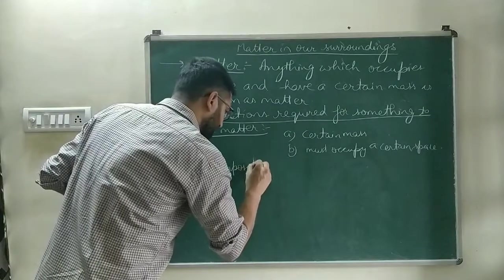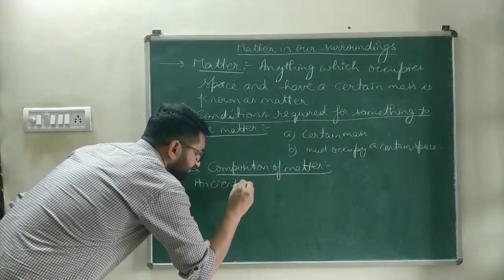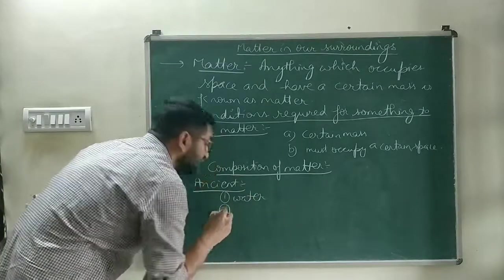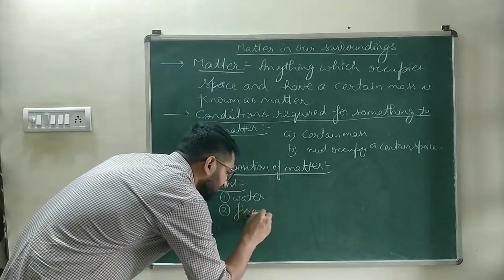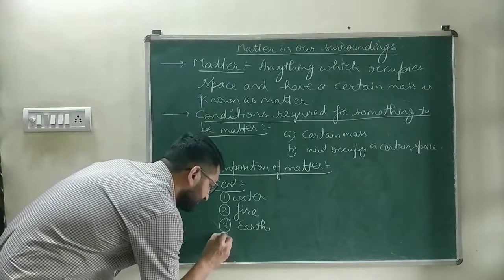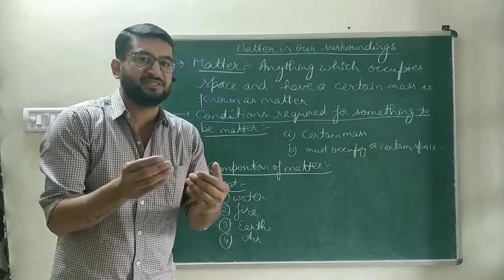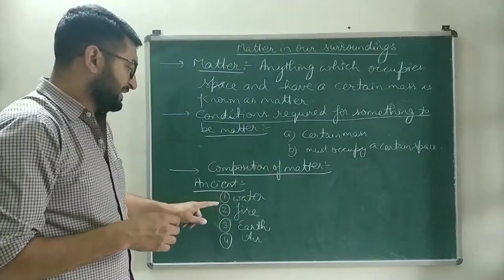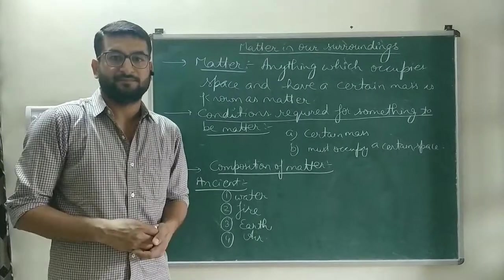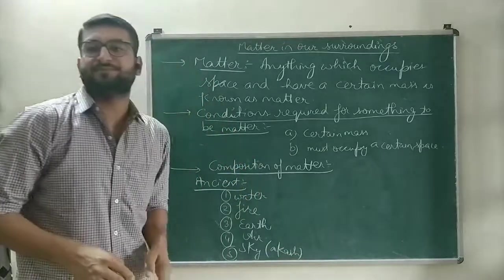Next is the composition of matter — ancient mythology. Ancient classification suggests that matter is made up of five things. Those five things are: Water (Jal), Fire (Agni), Earth, Air, and the fifth one is Sky (Akash). These are the five basic constituents, the panch tattva, which are referred to as the basic elements of matter.